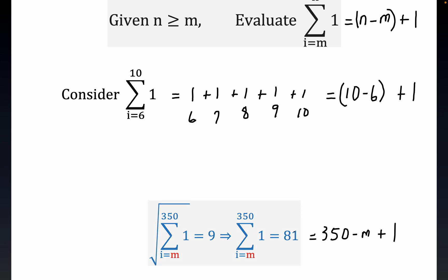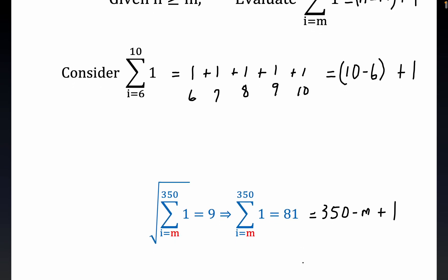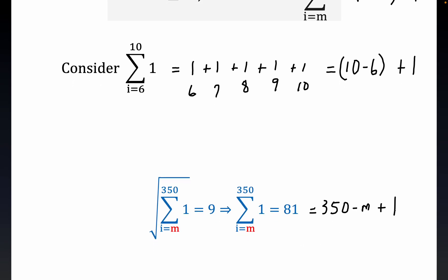Has to equal this 81 right here, right? And so with just a little bit of algebra here, not much arithmetic I guess, subtract 1 from both sides and you get 80 equals 350 minus m.